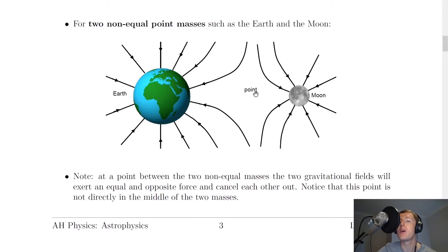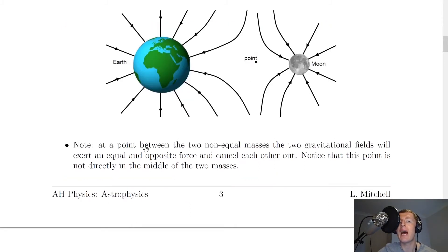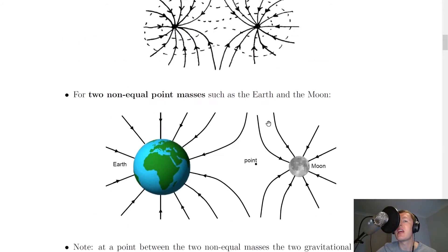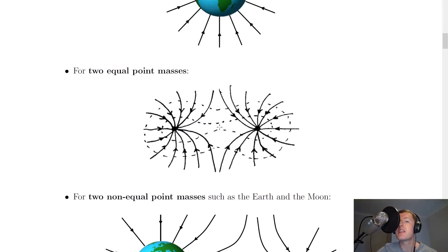And you've also got this point, which is a point of interest here. Note that at a point between the two non-equal masses, the two gravitational fields will exert an equal and opposite force and cancel each other out. Notice that this point is not directly in the middle of the two masses, and this is because the two masses are not the same. You'll see in this case, we've got the point actually closer to the smaller mass. Another way of thinking about this is that that point is like the centre of mass of your system of the two objects. So if we think about that in terms of the two equal point masses, this space in the middle, directly in the middle, is where the two gravitational forces are equal and opposite and will therefore cancel out.